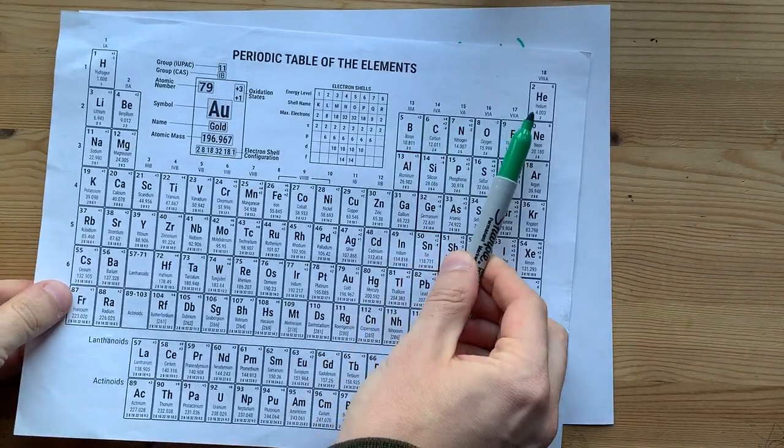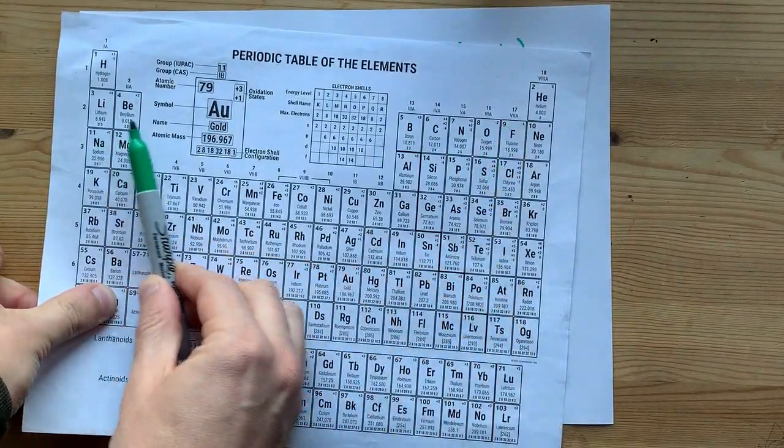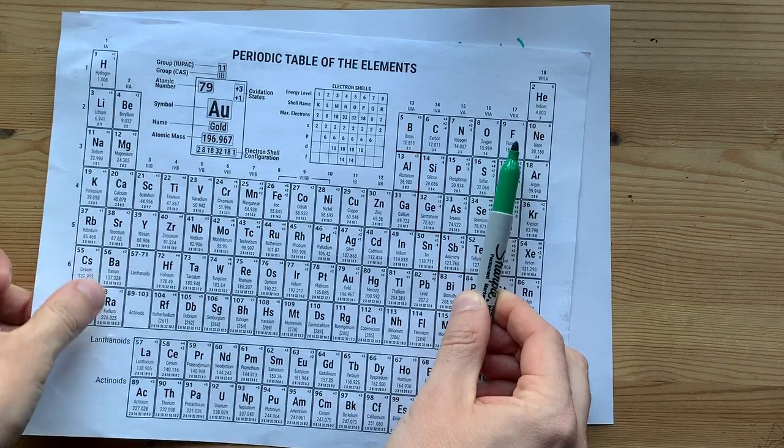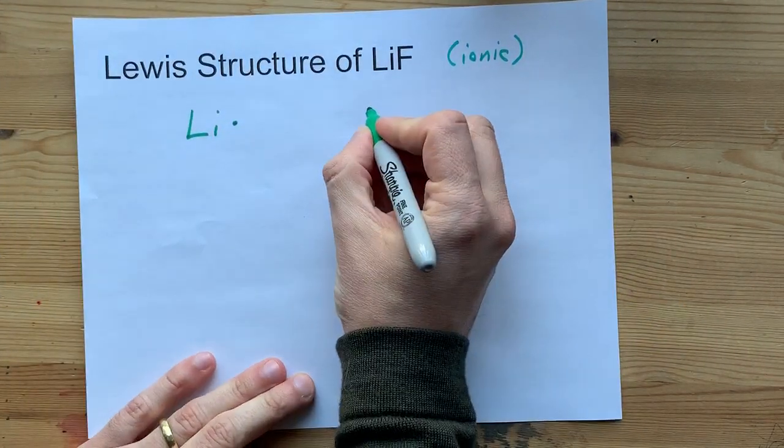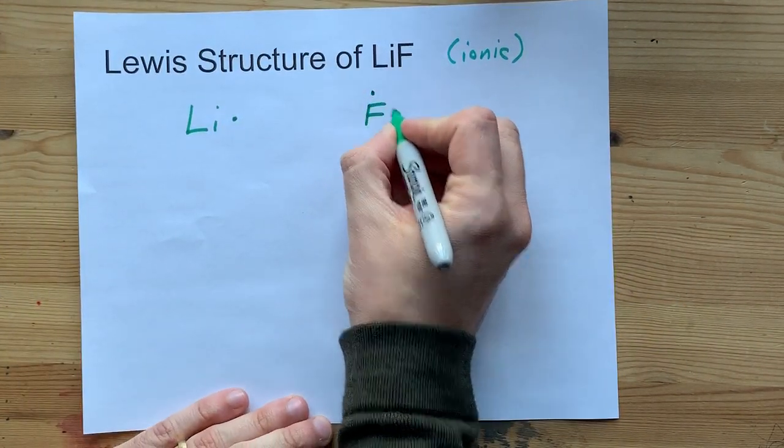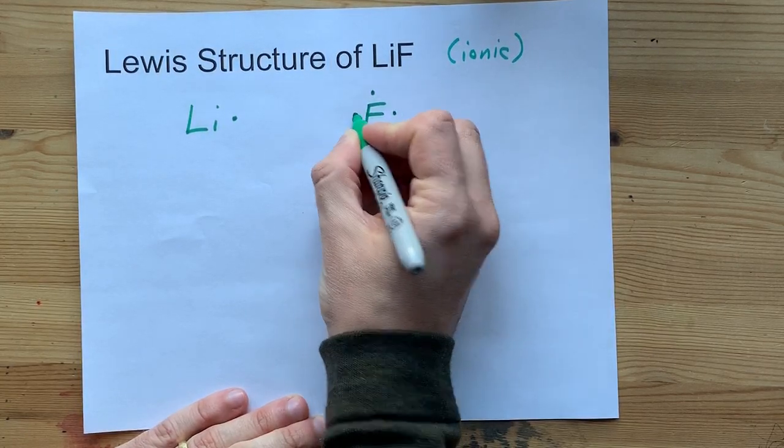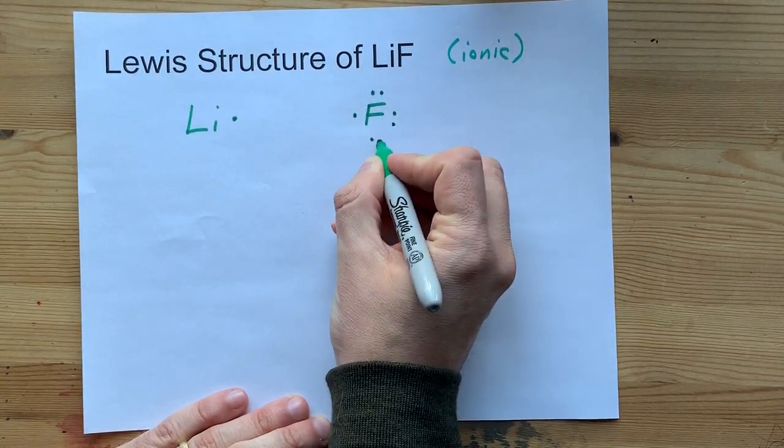Fluorine is in the 17th column or the seventh in its row. It comes with seven valence electrons: one, two, three, four, five, six, seven.